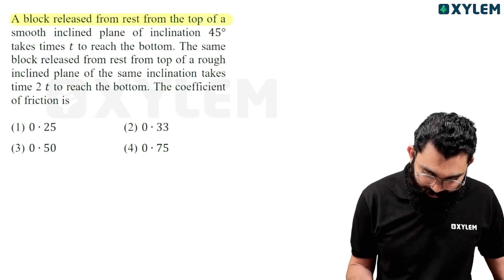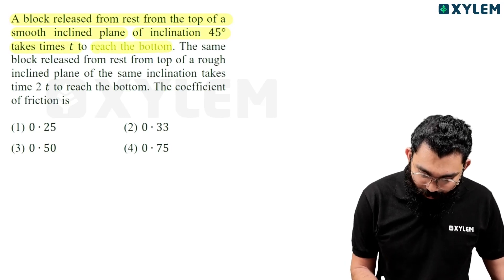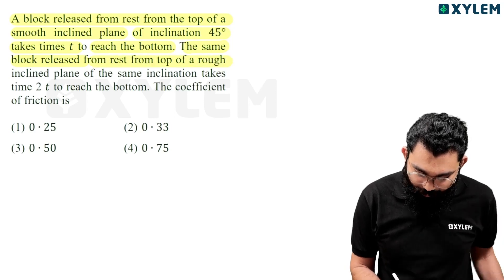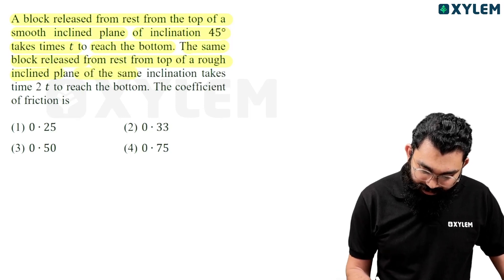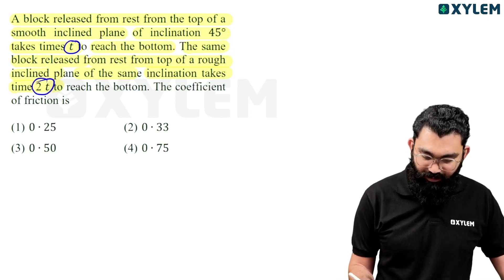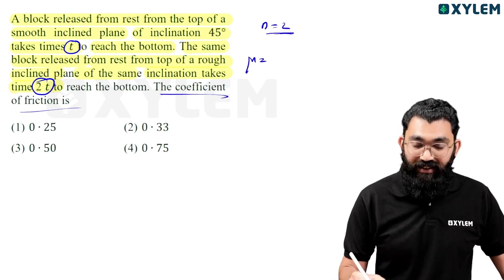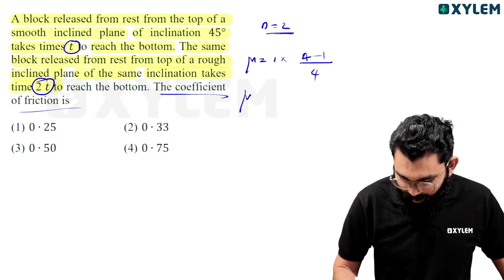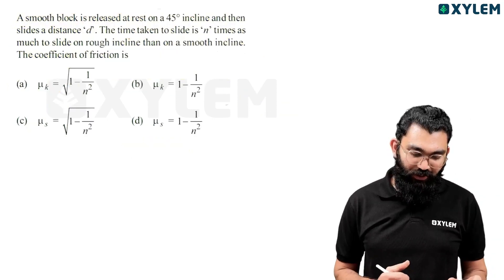Example question: A block is released from rest at the top of a smooth inclined plane of inclination 45°, taking time t to reach the bottom. The same block released from rest on a rough inclined plane of the same inclination takes time 2t. So n equals 2. Coefficient of friction μ equals tan 45° times (n² minus 1) divided by n² equals 1 times (4 minus 1) divided by 4 equals 3/4 equals 0.75.